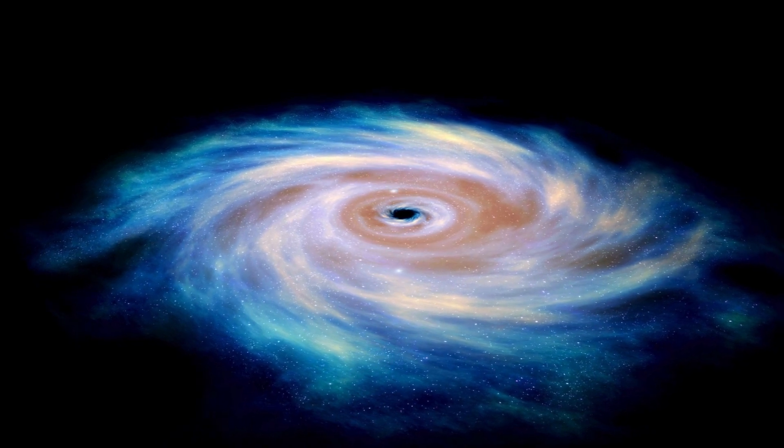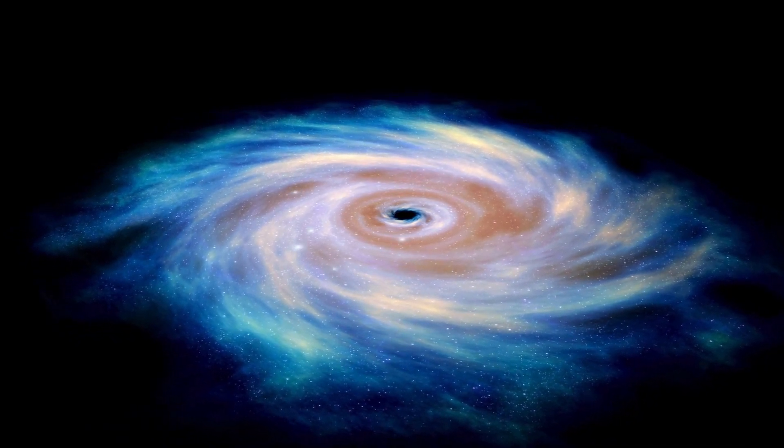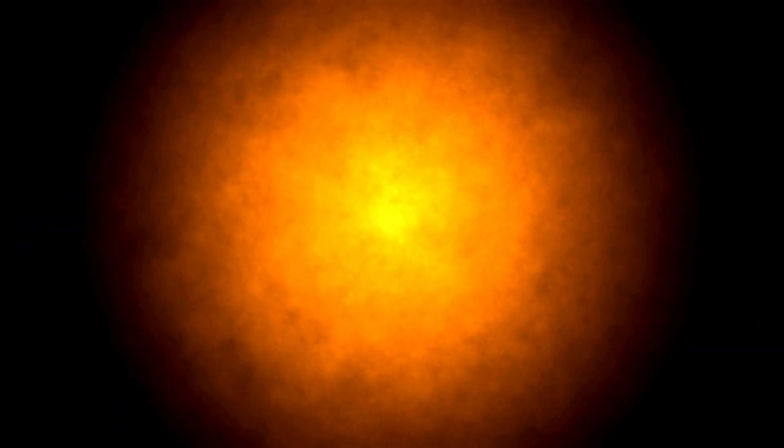Betelgeuse, also referred to as Alpha Orionis, is typically the 10th brightest star in the night sky and the second brightest star in the Orion constellation, indicating the hunter's right shoulder. This red giant star is unique among the prominent stars in Orion, which are mostly bright young blue giants or supergiants. Along with stars like Rigel and the Orion Nebula, it creates a visually stunning celestial image in our Milky Way galaxy.